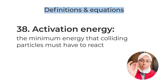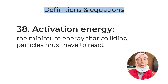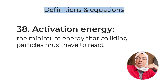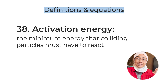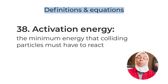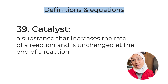Definition number thirty-seven: enthalpy change — the transfer of thermal energy during a reaction. Definition number thirty-eight: activation energy — the minimum energy required by colliding particles so that they can react. Activation energy is usually shown in a diagram — it's always the arrow from reactants to the peak. For enthalpy change, the arrow goes from reactants to products. Definition number thirty-nine: catalyst — a substance that increases the rate of a reaction and remains unchanged at the end of the reaction. You must include both points.